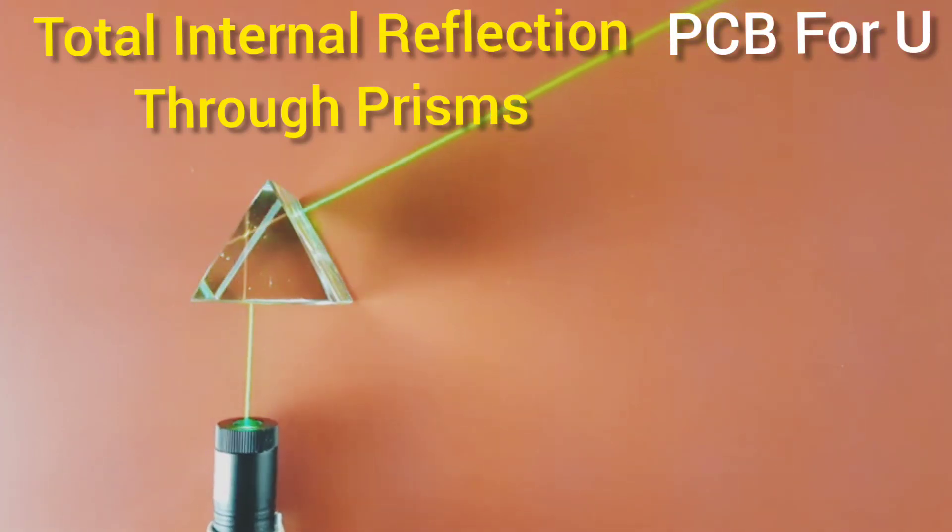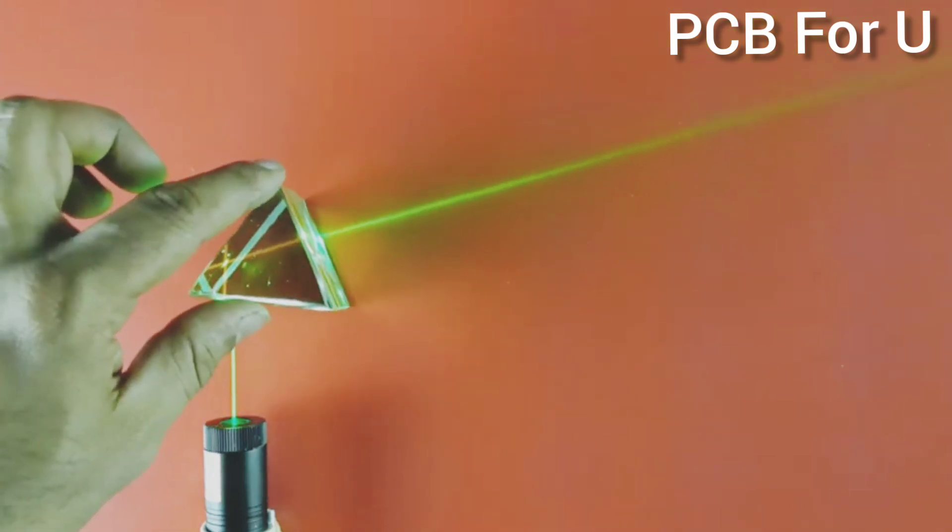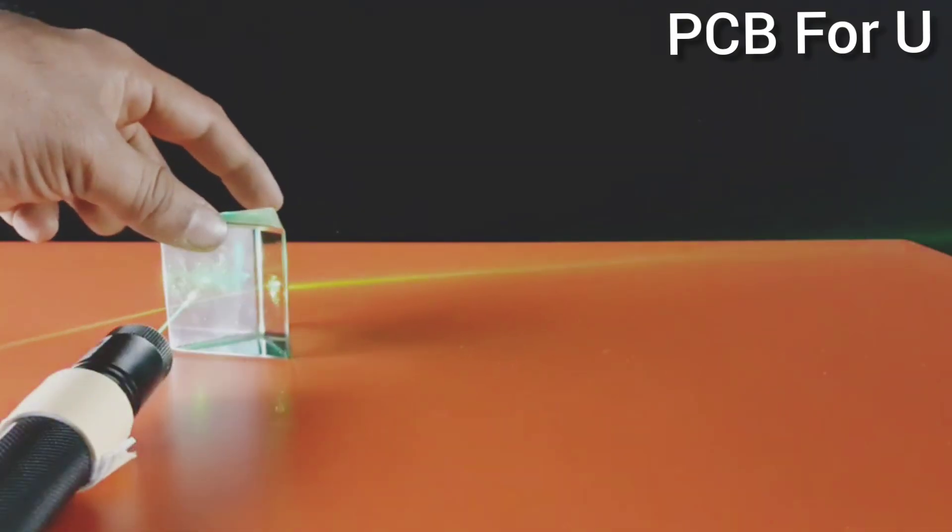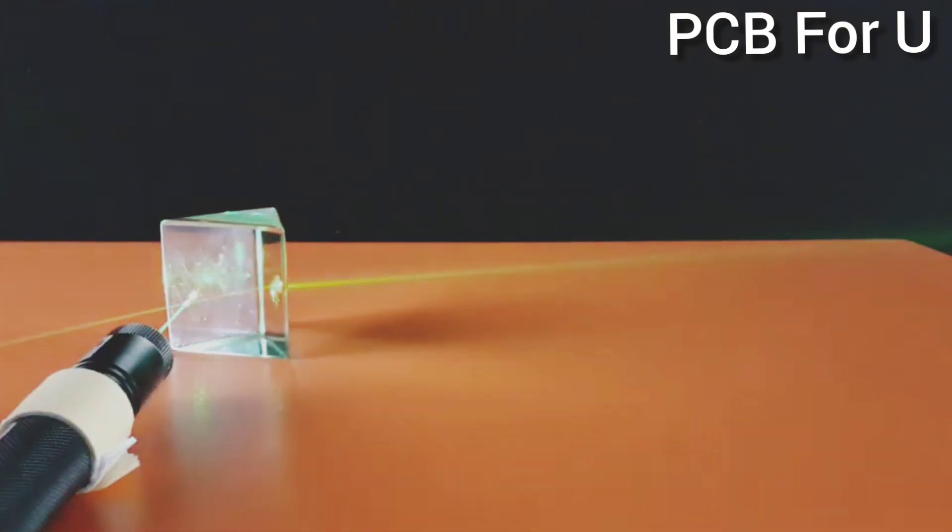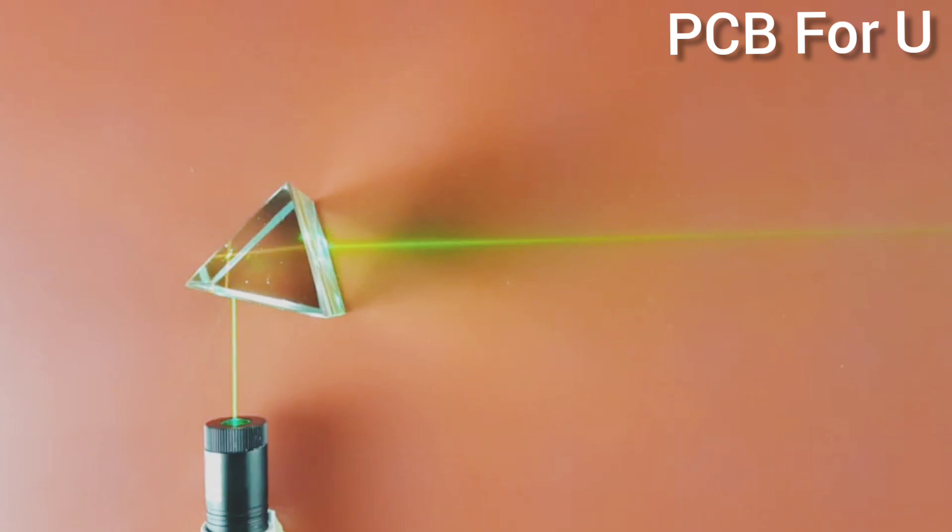Now we are going to see total internal reflection through prism. See the ray of light which is on the prism. If we rotate the prism, we can get 90 degree total internal reflection.